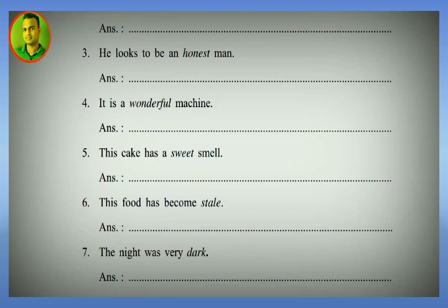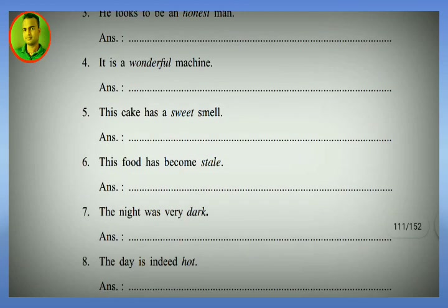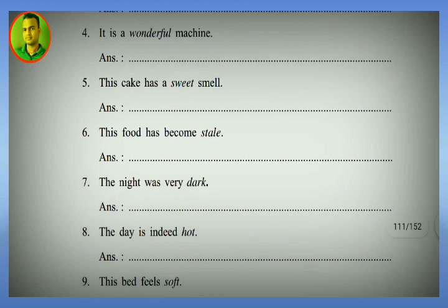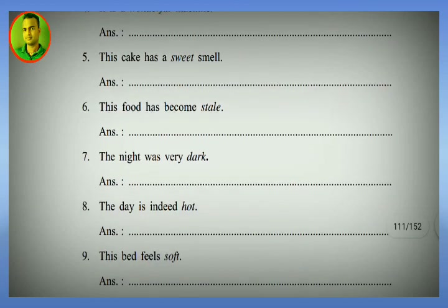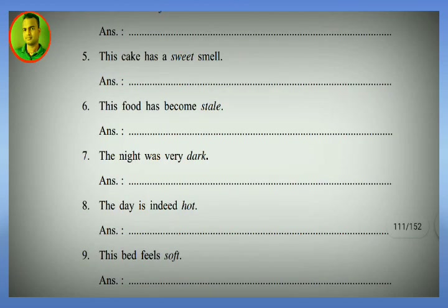Alternative predicative form: 'The machine is wonderful.' Number five: 'This cake has a sweet smell.' Alternative: 'This is a sweet-smelling cake.'